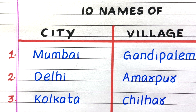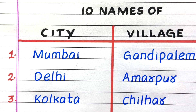The name of the first city is Mumbai, second Delhi, third Kolkata. The name of the first village is Gundipalem, second Amarpur, third Chilher.